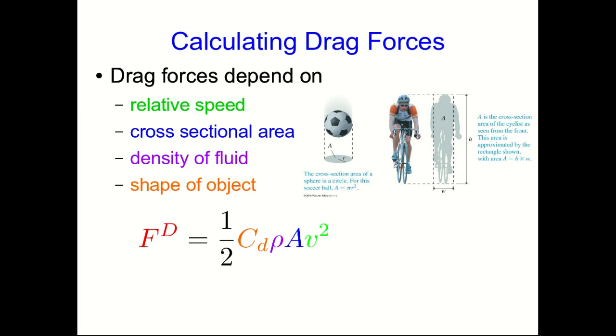The formula you can use looks like this, and you can see the speed in green, and the cross-sectional area in blue, and the density of fluid in purple.